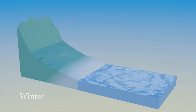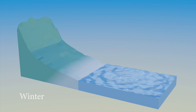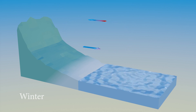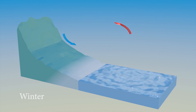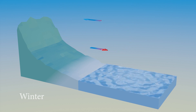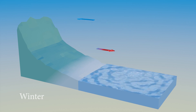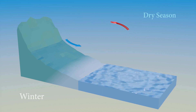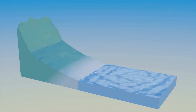In winter, the situation flips. The land cools down more quickly than the ocean, so the air over the ocean becomes warmer and rises, creating a low pressure area. Cold, dry air from the land moves towards this low pressure area, creating a dry season. This switch between rainy and dry seasons is what we call monsoon.